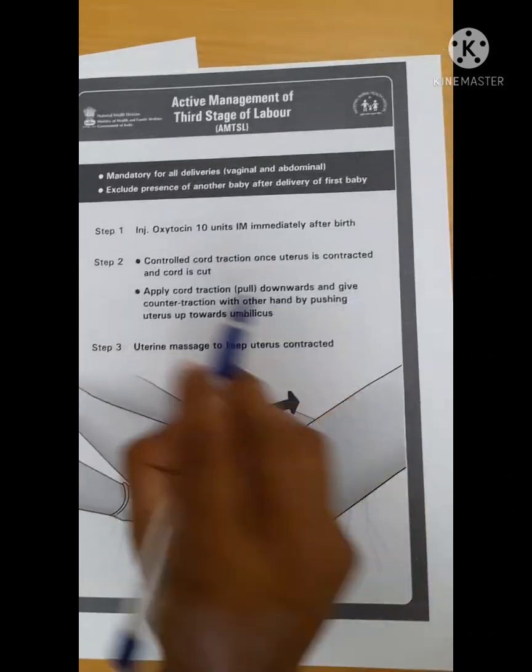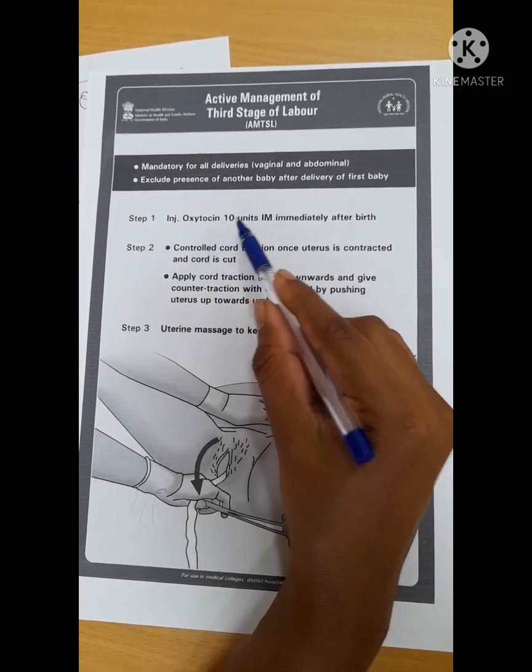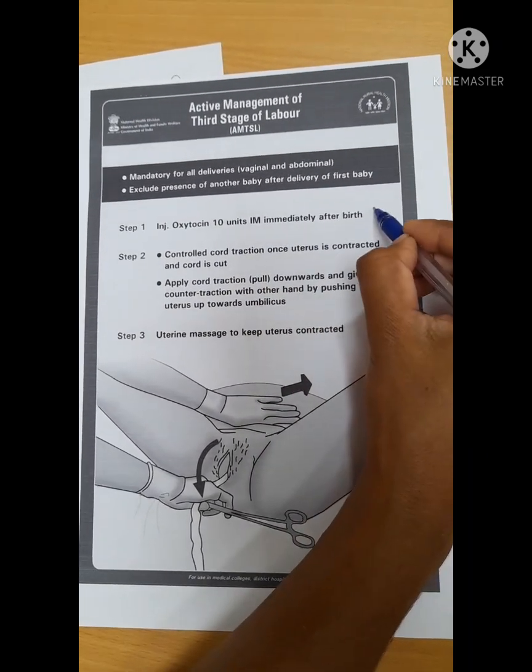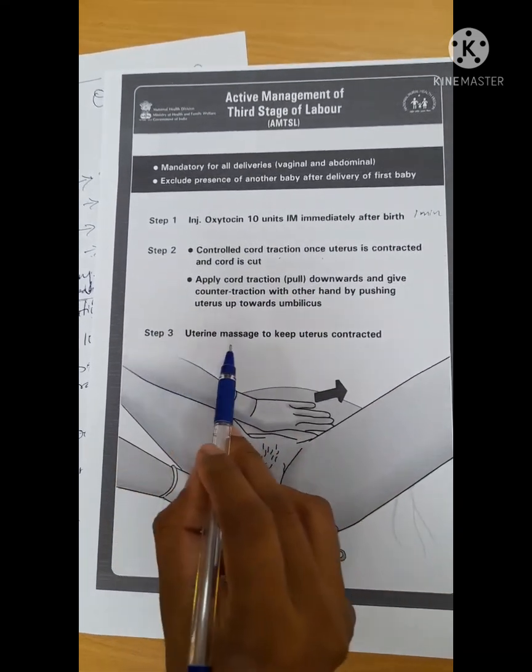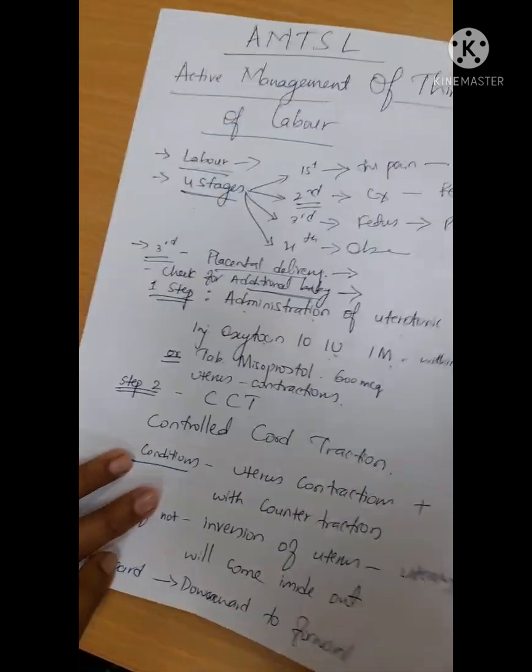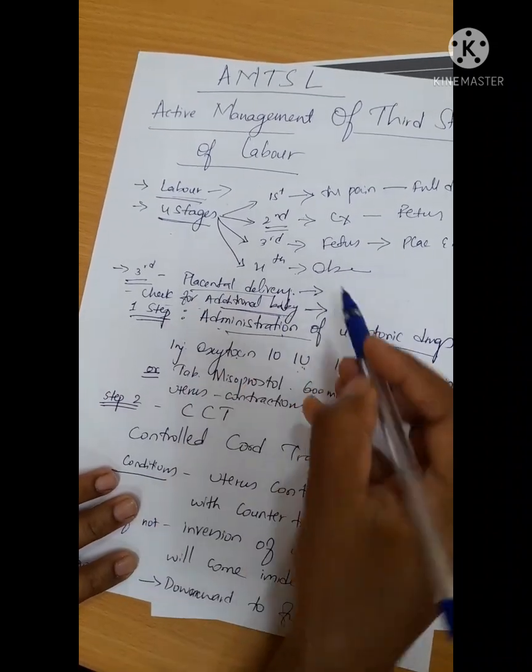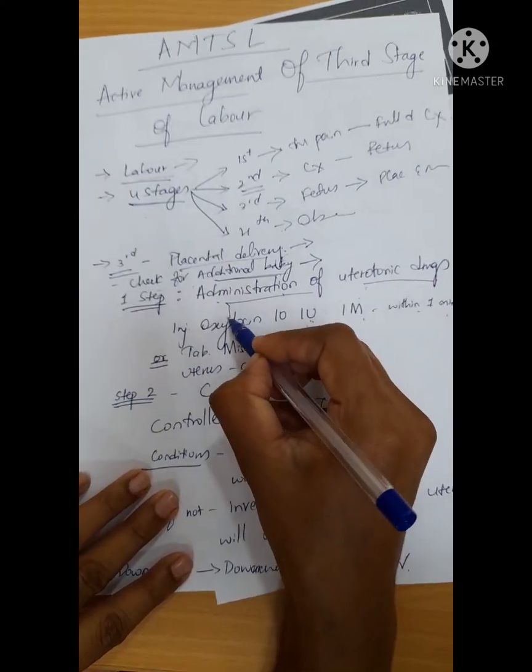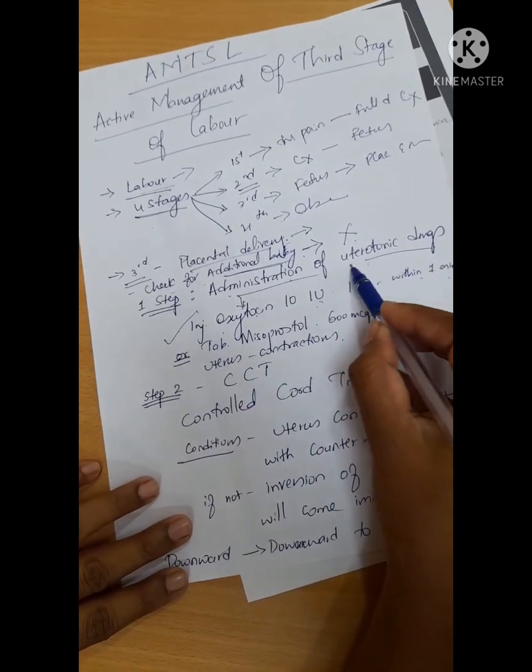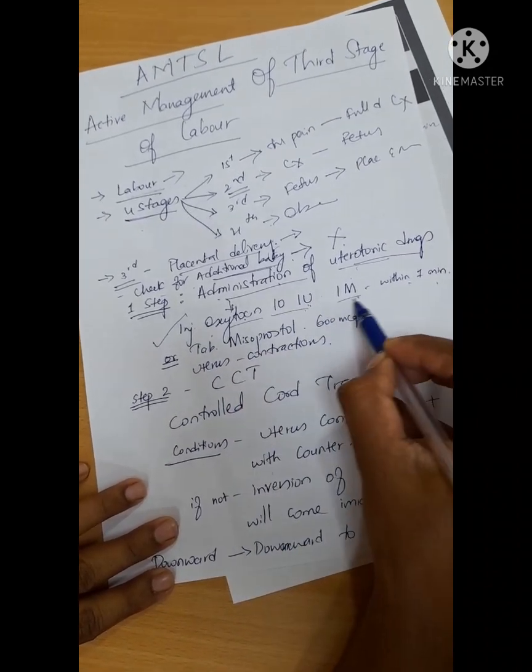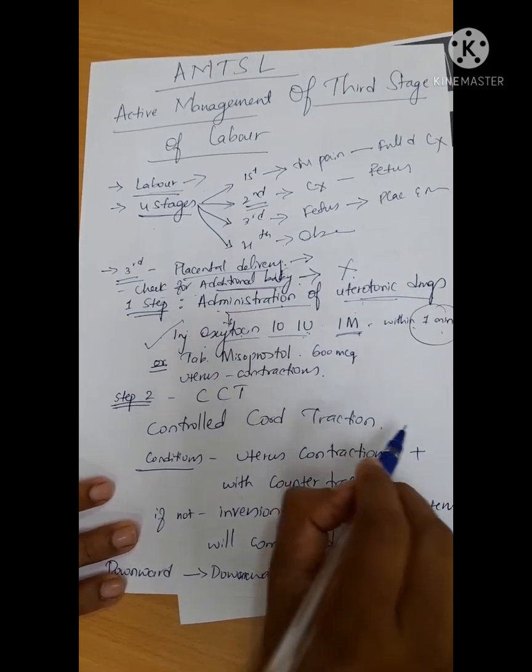There are three very simple steps. Step one: injection oxytocin, administration of uterotonic drugs. Oxytocin should be given 10 units IM immediately after birth, within one minute. Before administration of uterotonic drugs, you should check per abdomen if there's an additional baby. We should not give oxytocin if there's an additional baby. Check that there's no additional baby, then go for giving injection, administering uterotonic drug, that is oxytocin 10 units IM intramuscularly in the anterolateral aspect of the thigh within one minute of baby's birth.